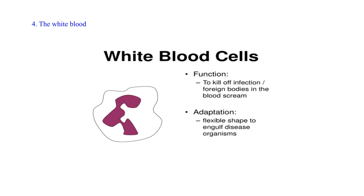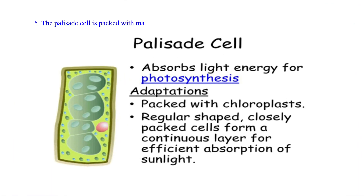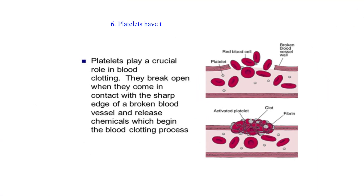Four, the white blood cell has a flexible shape which enables it to engulf disease-causing microorganisms. Five, the palisade cell is packed with many chloroplasts which absorb sufficient light for photosynthesis. Six, platelets have the ability to change their shape.